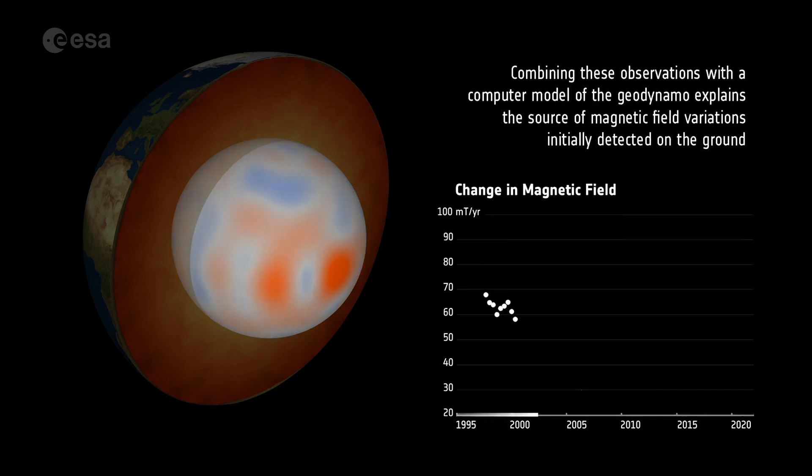Combining these observations with a computer model of the geodynamo explains the source of magnetic field variations initially detected on the ground.